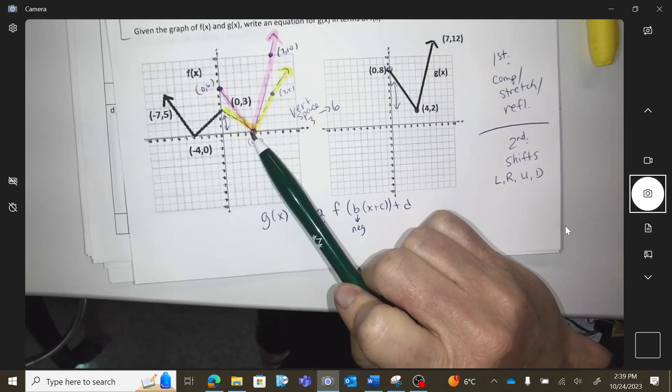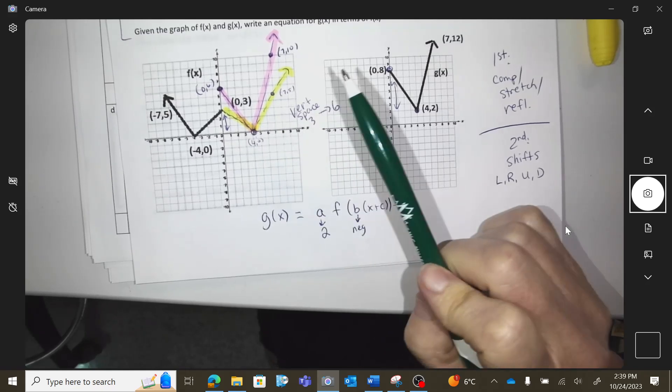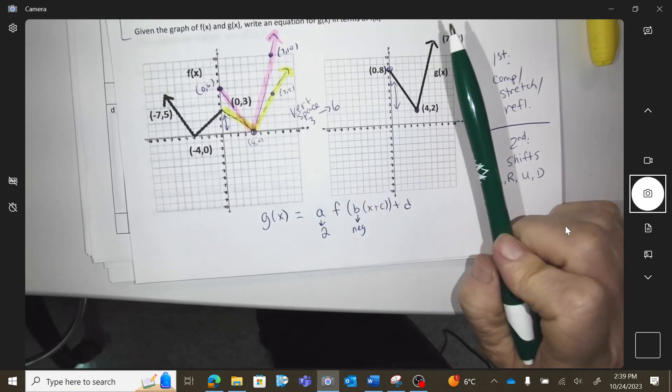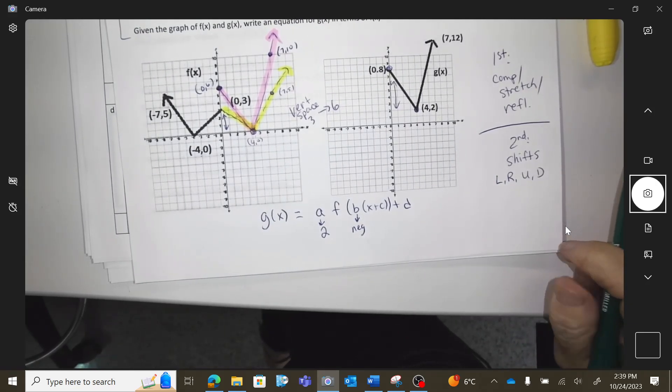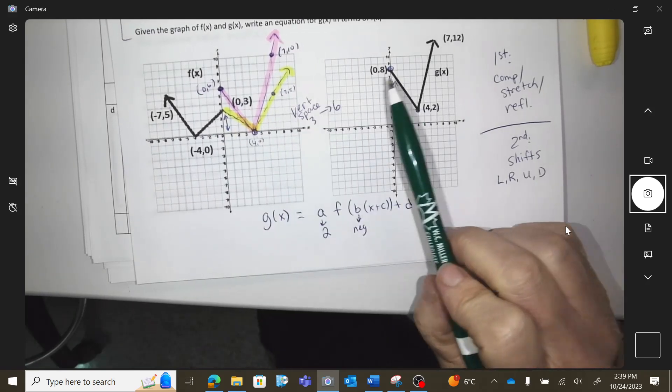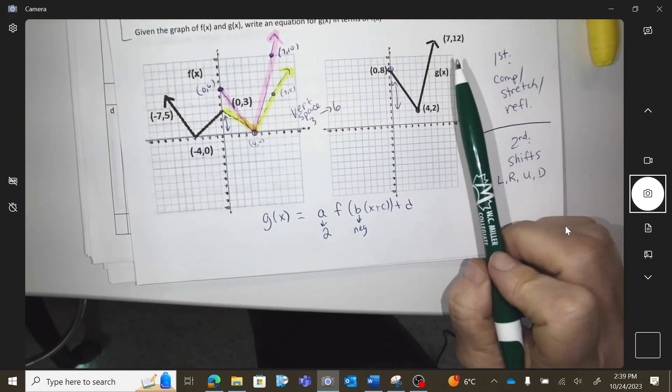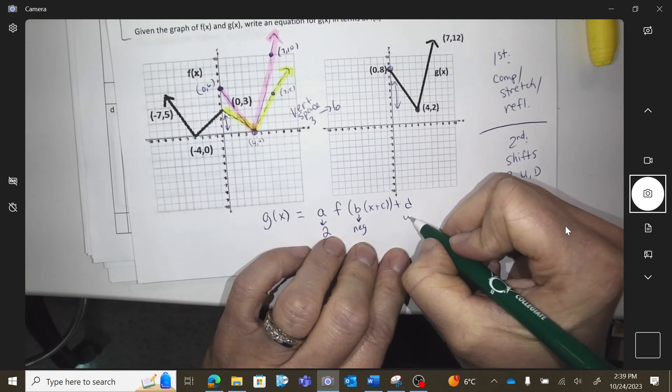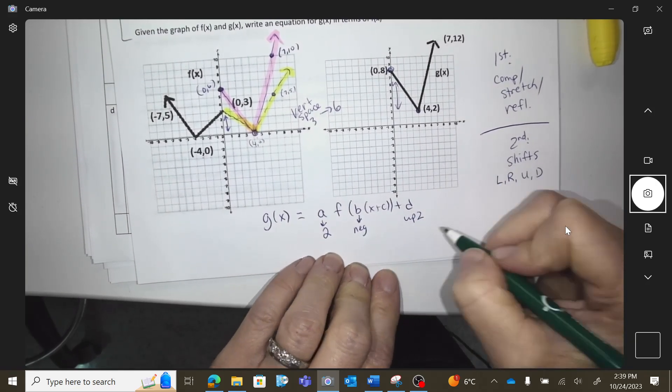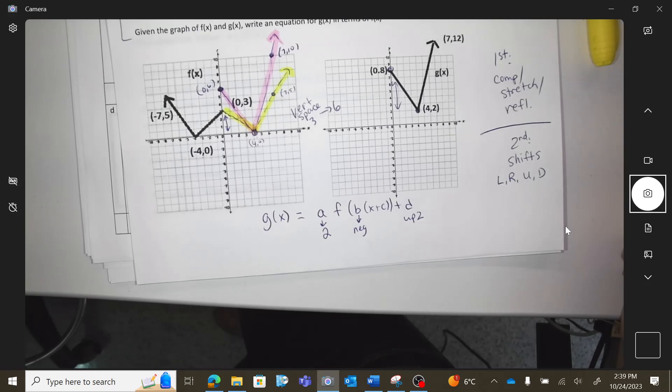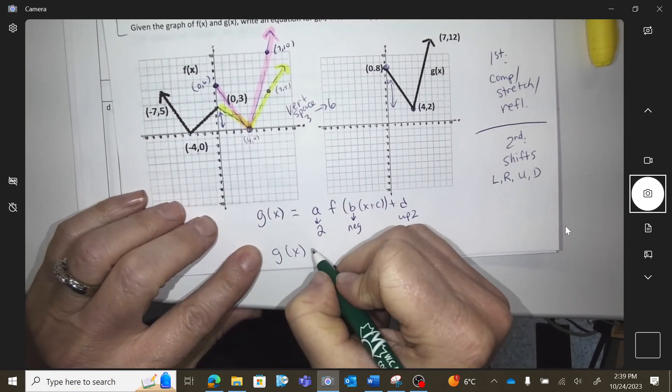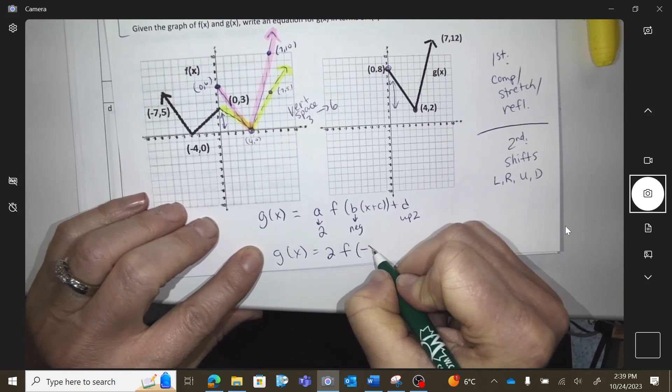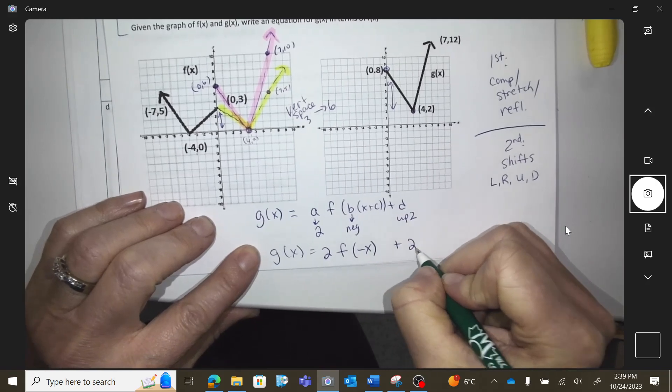Okay, so now we're at up to the pink. What's going to happen from the pink to this one? You're going to have to take each point up two, so up two would change my d. And then that would be it, right? We would have landed. So g of x equals two f negative x plus two.